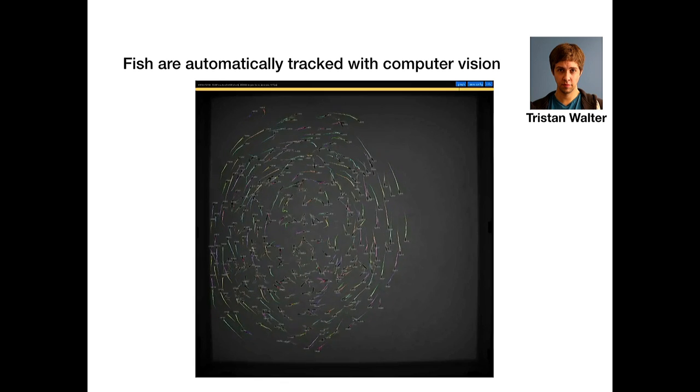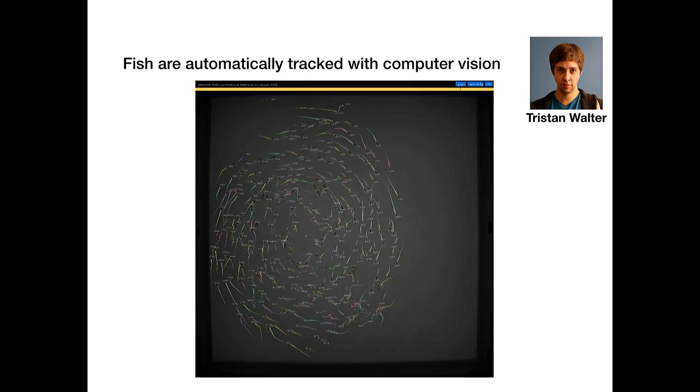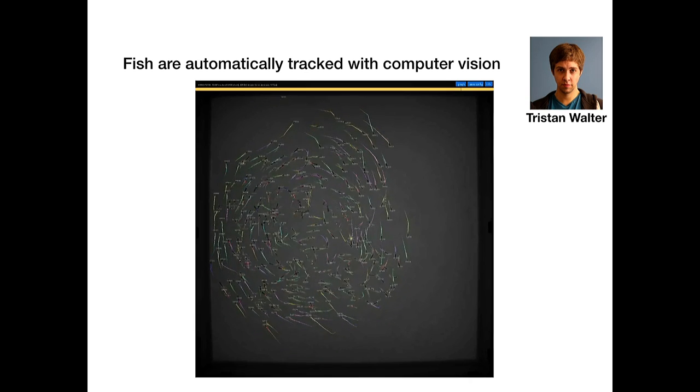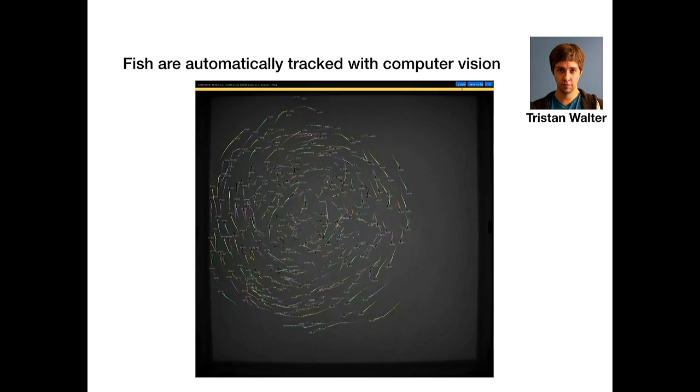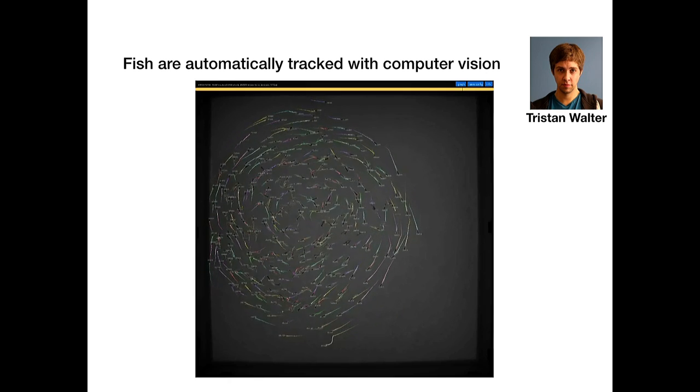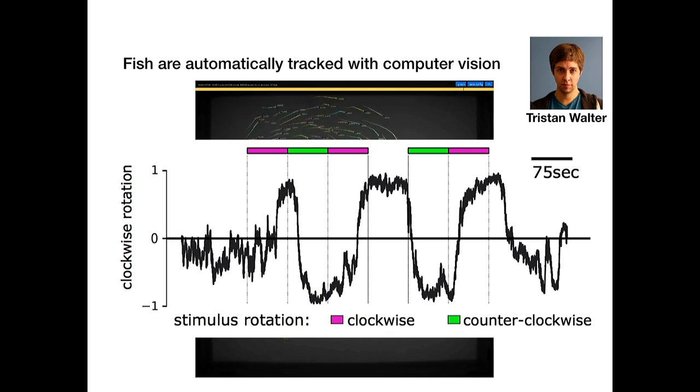So we can track the fish using a computer vision software developed by a graduate student in the lab, Tristan Walter. And Tristan has really optimized the system to work really quickly so that we can collect lots of data with very large group sizes and not be bogged down with the long processing time that a lot of systems require. So we get data that looks something like this. We can quantify the rotation direction by just calculating the rotational order parameter but keeping the direction. So here when presented with clockwise and counterclockwise rotation, you see that the order parameter goes from zero to one to negative one in response to the stimulus.